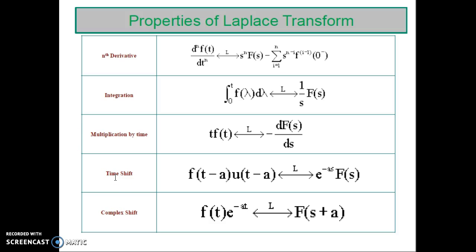The next important property is the time shifting property. f of t minus a into u of t minus a, if you obtain the Laplace transform, results in e raised to minus as into f of s. Here, f of t minus a indicates the sequence f of t shifted in the time domain, that is delayed by a. So, shifting a signal in the time domain by a corresponds to multiplication by e raised to minus as in the frequency domain.